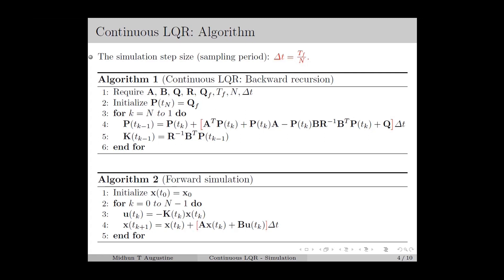Note that here we have used the time-discretized version of the state equation for updating the state vector. Here x(tk+1), which is x(tk + delta t), is equal to x(tk) plus x-dot times delta t, where x-dot is given by the state equation. This is basically the first-order Taylor approximation. We can also obtain the next state by integrating the continuous-time state equation from tk to tk + delta t using numerical integration tools such as ODE45.